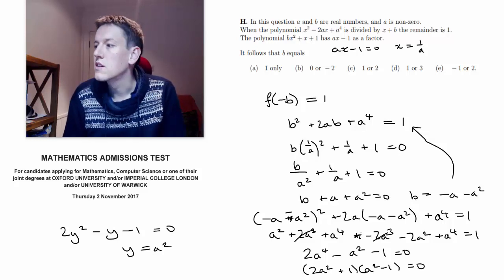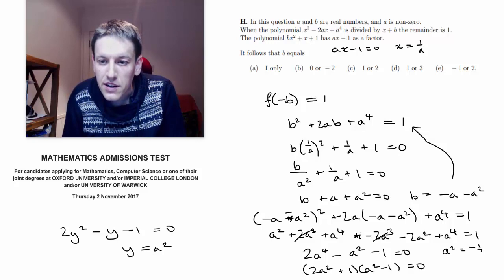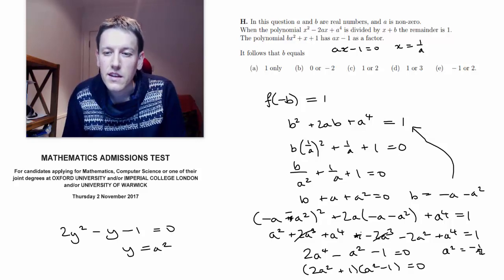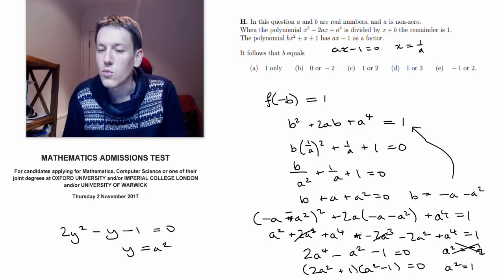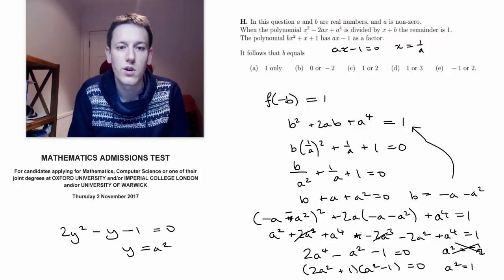So this means that, oh, I'm running out of space here, either a squared is minus a half, from the first factor, that's not possible if a is going to be a real number, so I must have that a squared is 1, so that means that we have a equals plus or minus 1.